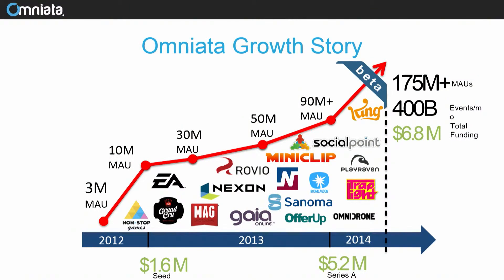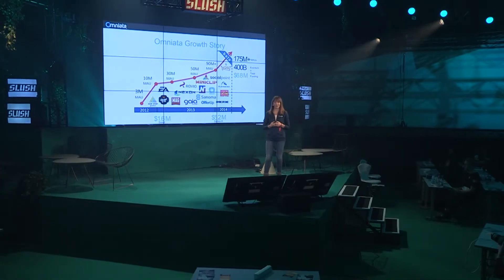First, shortly about the Omniata growth story. The company was founded in California two years ago. The founders are former data leads from Digital Chocolate and Electronic Arts, and all this time we have developed the product with our customers. We are privileged to work with really exciting games companies such as Electronic Arts, Rovio, Miniclip, and King.